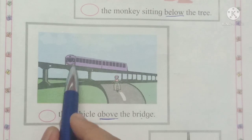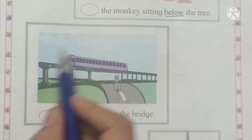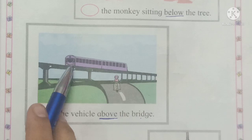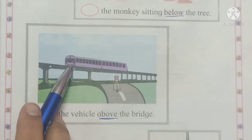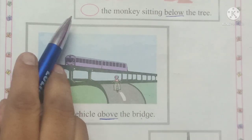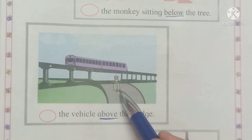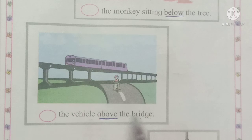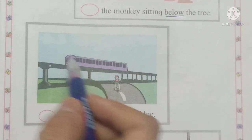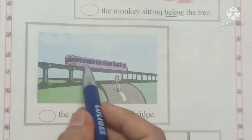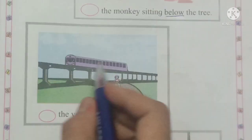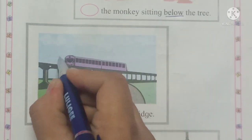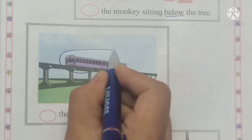Yes! This vehicle is above the bridge. The train is above the bridge, and the scooter is below the bridge. The vehicle above the bridge — we have to circle that. Train is above the bridge, so we will circle the train.